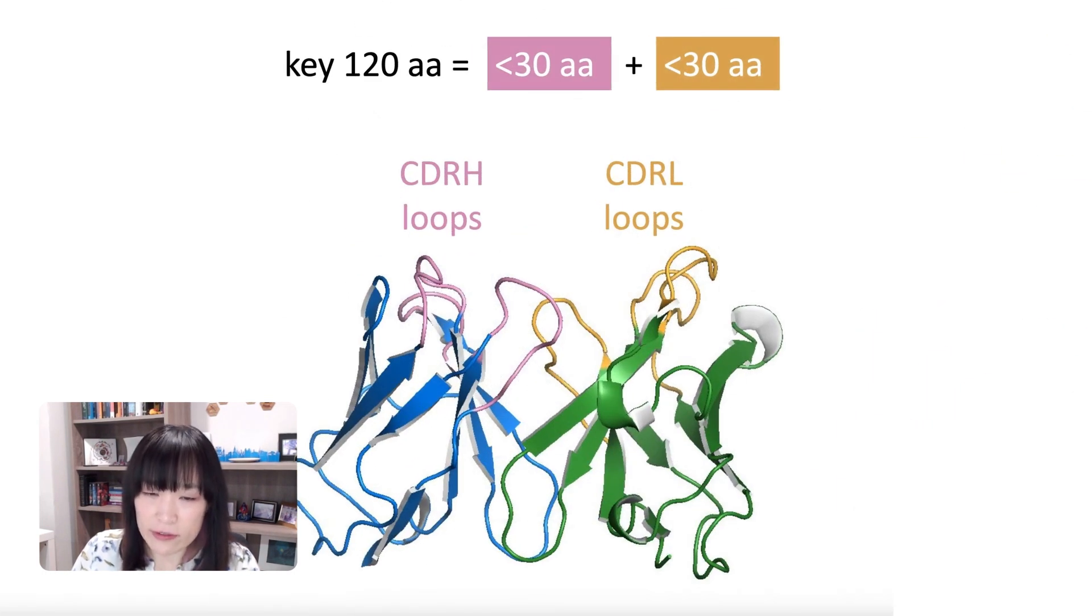So now let's zoom in even further. Now we're only looking at the VH and VL and actually in those VH and VL domains, only three CDR loops, as they are called on each of the chains, are the really, really important parts. So CDRH for the loops on the heavy chain, there's three of them. And then CDRL for the light chain. And there are three loops here as well. And the total number of amino acids in the three loops here is about less than 30 amino acids. And the same is for the light chain. So when you really zoom in, the very, very key residues in an antibody are only about 120 amino acids.